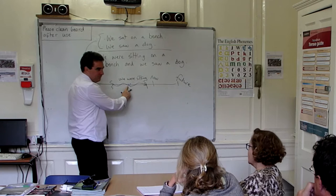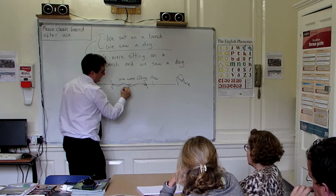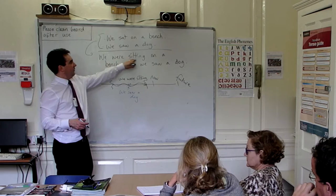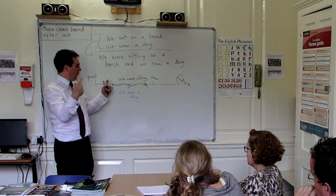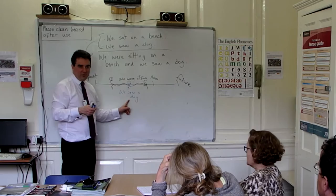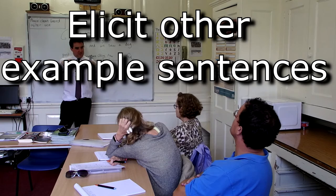So here we were sitting — we were sitting here, yes? And then we saw a dog. We saw a dog — the past. We were sitting, we saw a dog. So we have past continuous. With past continuous we have two actions. One: we were sitting. Two: we saw a dog. So two actions, yeah?